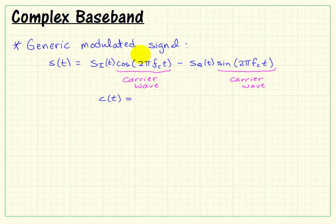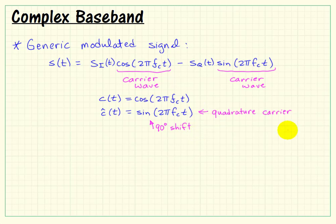And that allows an arbitrary phase to be established. I'll call the cosine carrier wave C of T, and the sine carrier wave C hat of T. Notice that sine and cosine are 90 degrees apart in terms of phase. We call the sinusoidal term the quadrature carrier. Quadrature is another name for saying 90 degree phase shift.